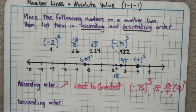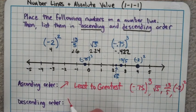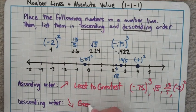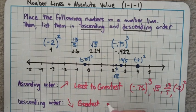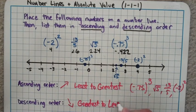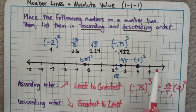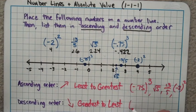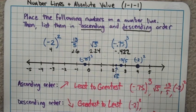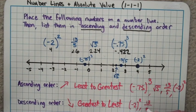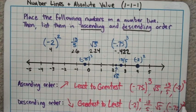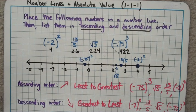Descending order. If a plane is descending, it's going down. So descending order means greatest to least. You want your numbers to go down in value. And all I'm doing here is flipping this list around. Start on the right and go smaller with the numbers. So I am left with negative 2 squared for my biggest, followed by 13 over 5, then we have square root of 5, and finally negative 0.75 to the third. So that is ascending and descending order.